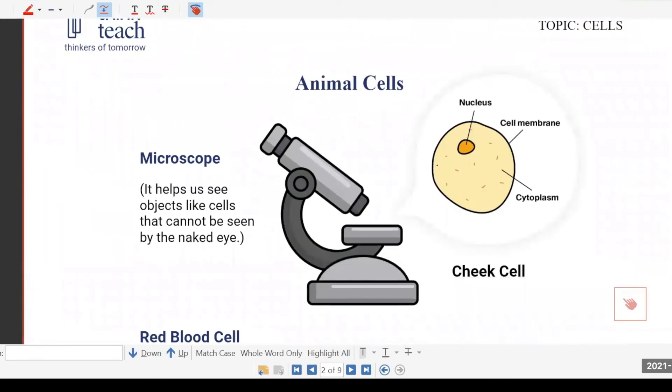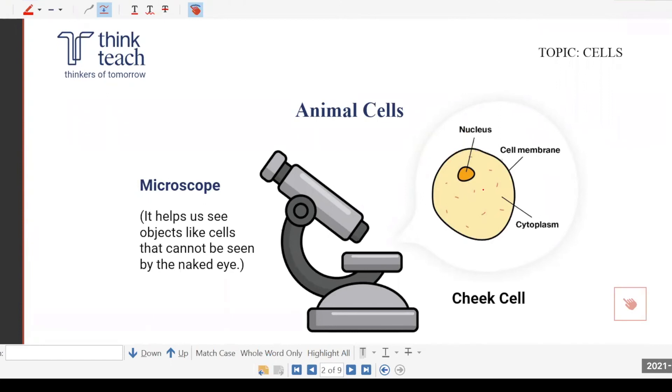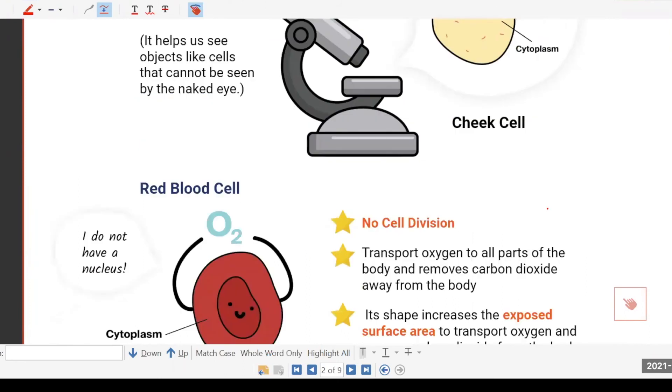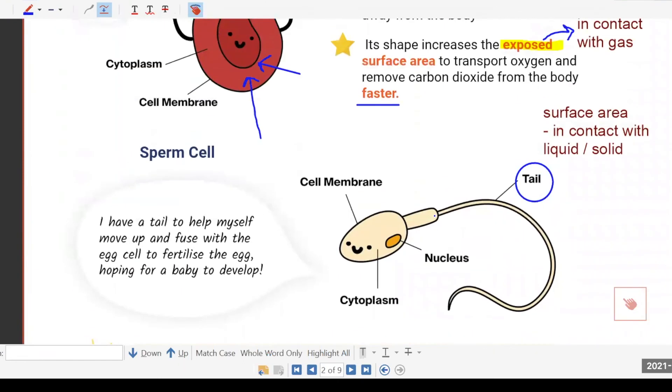What are the three animal cells that you must remember in your syllabus? The cheek cell, the red blood cell, and the sperm cell. Okay, so the three cells, you must know the different parts: nucleus, cell membrane, cytoplasm. Your sperm also has nucleus, membrane, cytoplasm present.